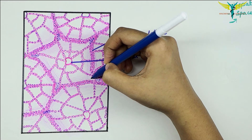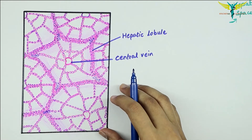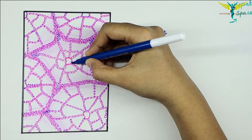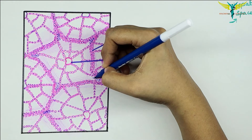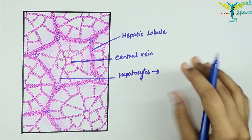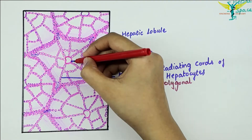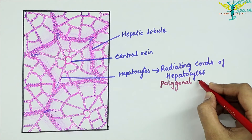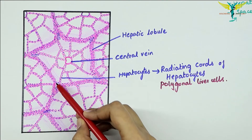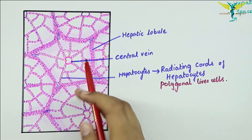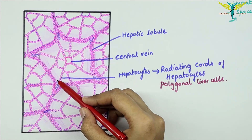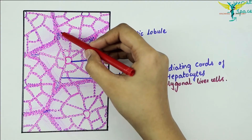These cords are made up of polygonal liver cells called hepatocytes. These are the radiating cords of hepatocytes arranged from the central vein to the periphery. Along the periphery of the hepatic lobules there are angular intervals filled by connective tissue.